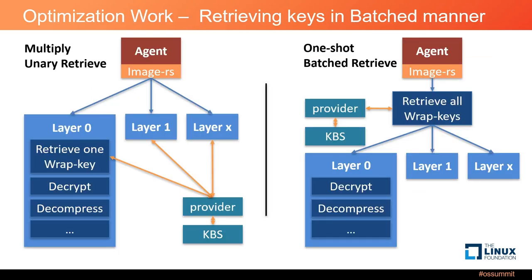This page shows our contributions to improve the key retrieval procedure. The agent uses image-rs as the image management module. The left figure shows that currently the agent handles layers in parallel and every layer sends a separate key retrieval request to the key provider, causing multiple communications and increased network delay. The right figure shows our design: we retrieve all keys in one shot before the layers are processed. To implement this, we need to add a batch retrieval API between the provider and its clients, and ensure symmetric keys can be mapped to their corresponding image layers.